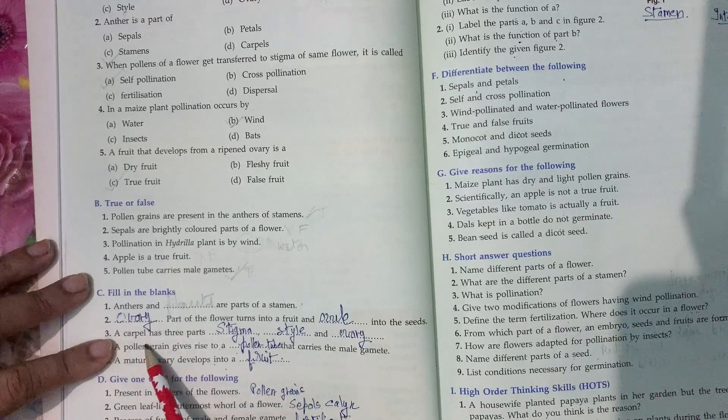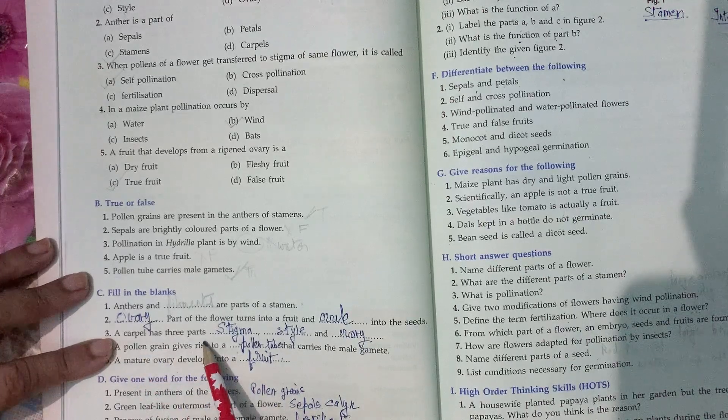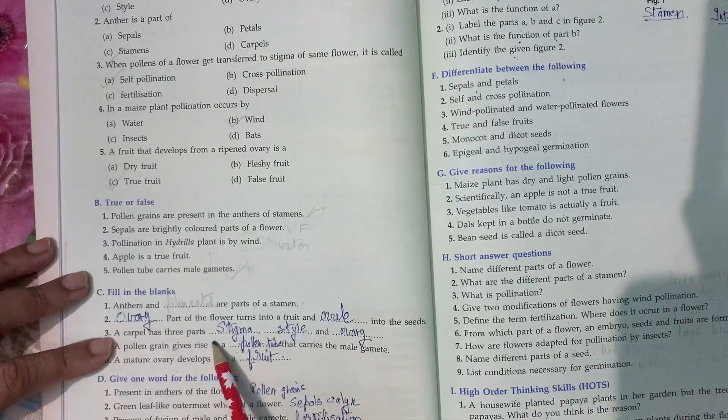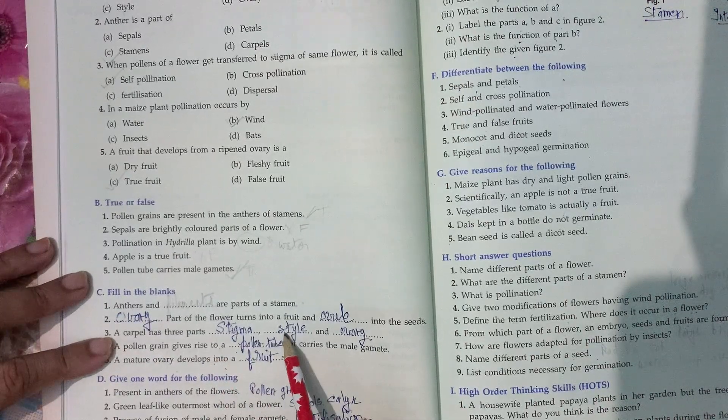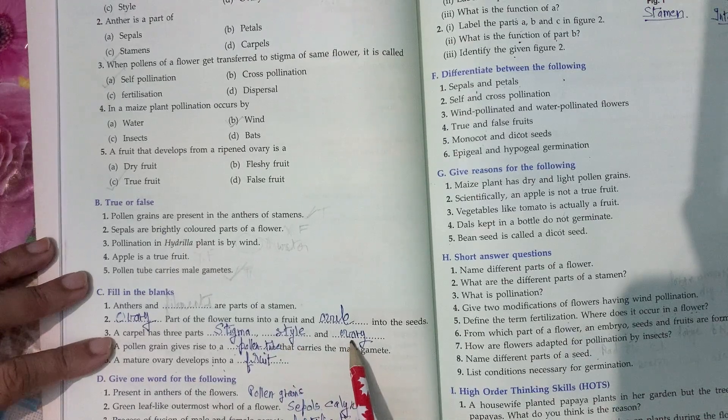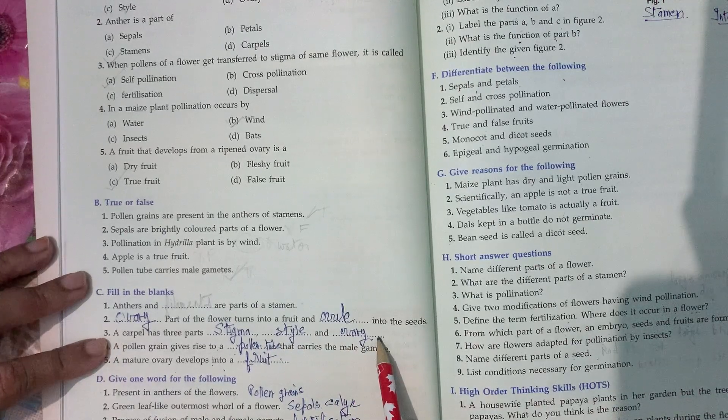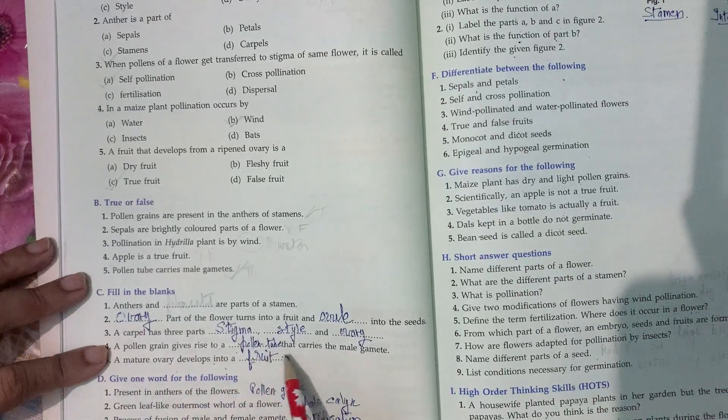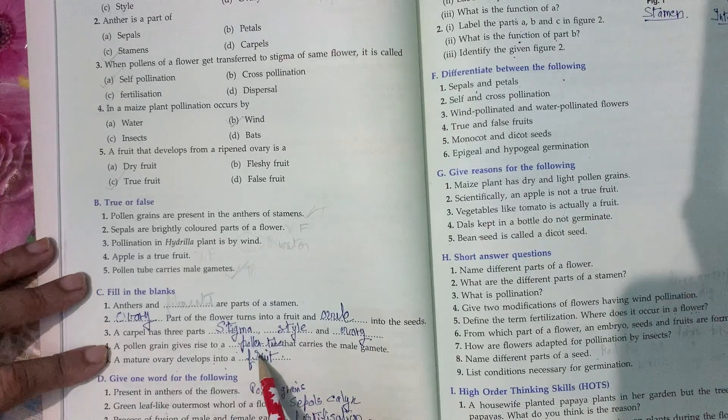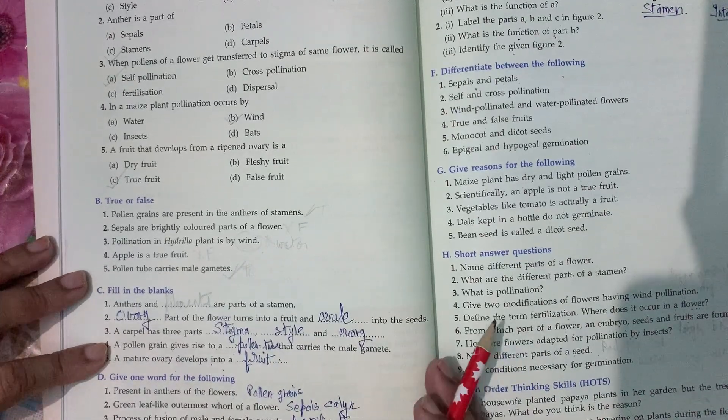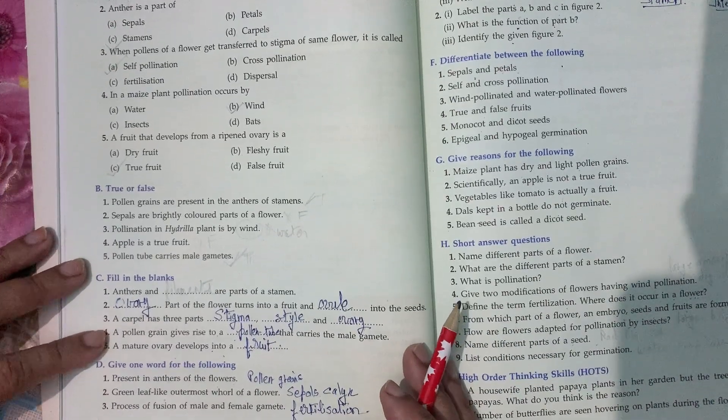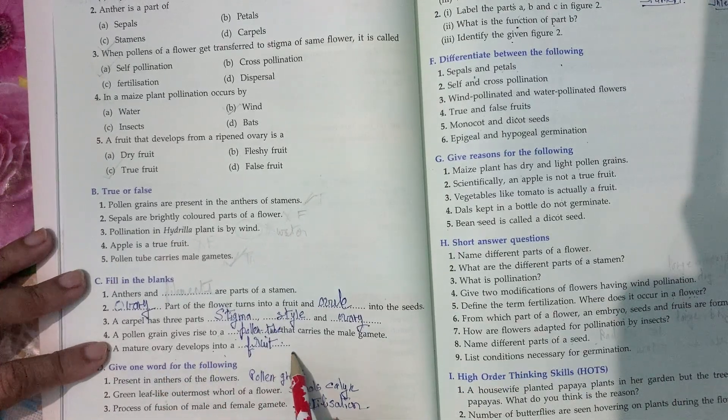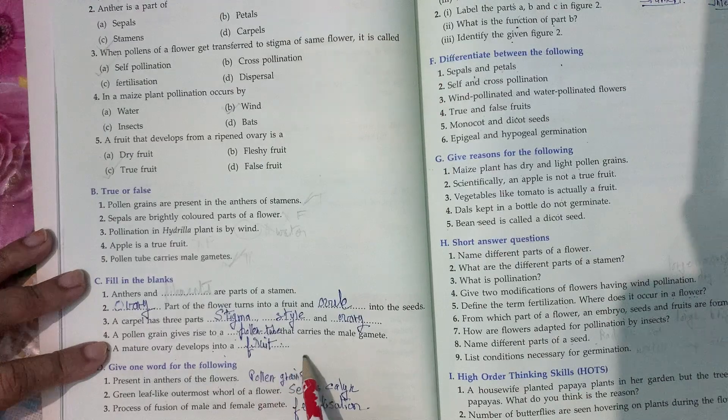A carpel has three parts: stigma, style, and ovary. A pollen grain gives rise to a pollen tube that carries the male gamete. A mature ovary develops into a fruit.